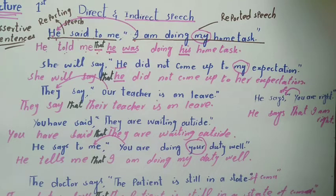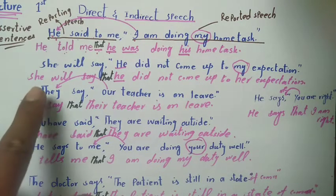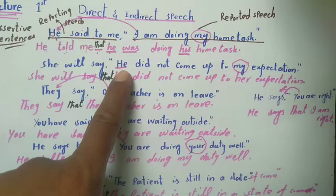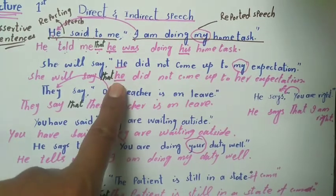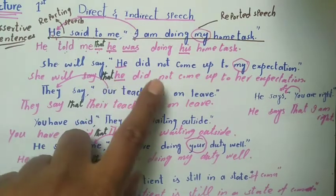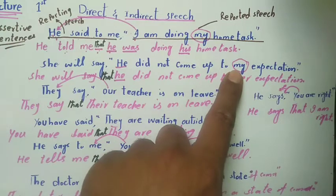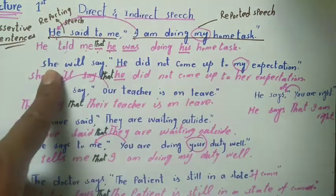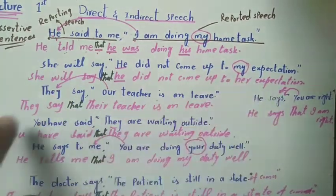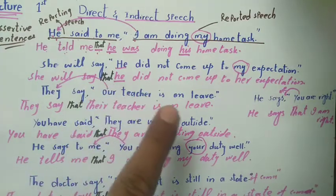Next example: 'She will say, he did not come up to my expectations.' If the reporting speech is present or future tense, then the reported speech tense does not need to change. Check the reported speech subject — 'he' — which is third person, so it never changes. The possessive 'my' is first person and the subject is 'she', so 'my' changes to 'her'. The indirect sentence is: 'She will say that he did not come up to her expectations.'